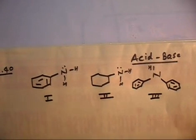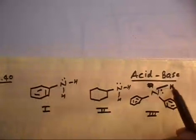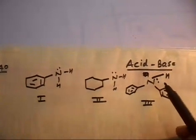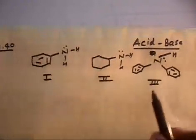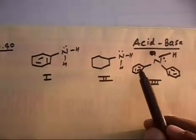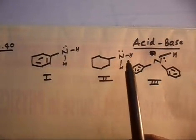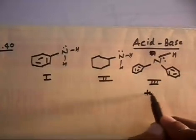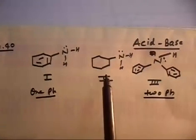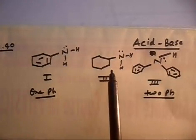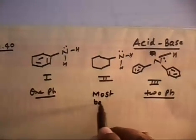In compound one, there is a lone pair on nitrogen. This lone pair is in resonance with this benzene ring as well as this benzene ring, so it can go into two benzene rings. In compound two, this lone pair can go into one benzene ring. In compound three, there is no benzene ring, so this lone pair cannot go anywhere — there is no resonance. This means this lone pair is least diffused and most available, so compound two... actually compound three is the most basic.